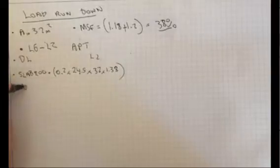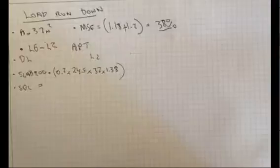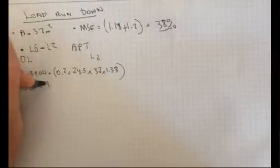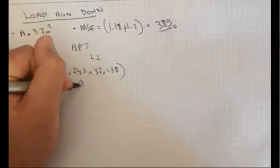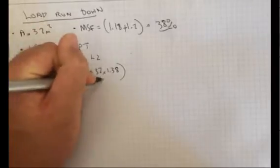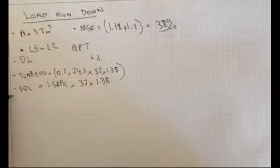Then we've got SDL. For the apartment, it's important to understand how the SDL is derived. It's going to be different for every type of building you've got. For an apartment, it's going to be roughly 1.5 kPa or kilopascals. You can again multiply that by the area, multiply by the adjusted real load that's attracted to it.